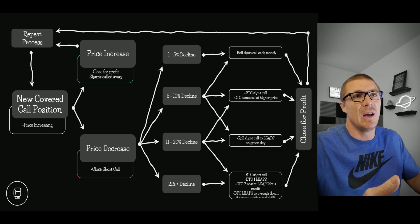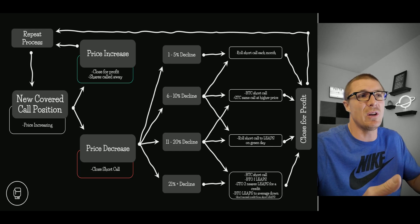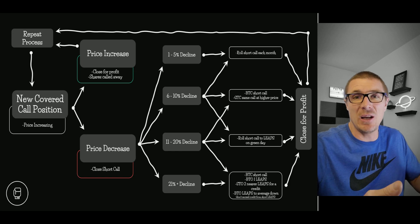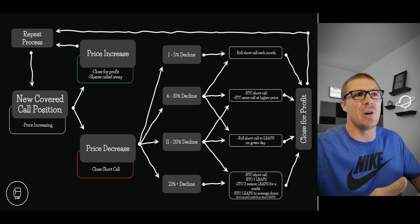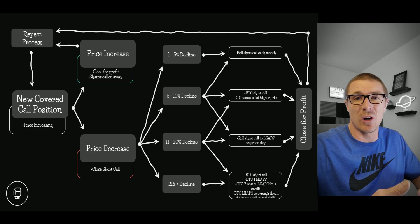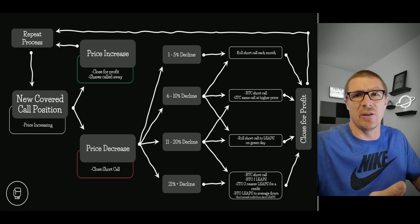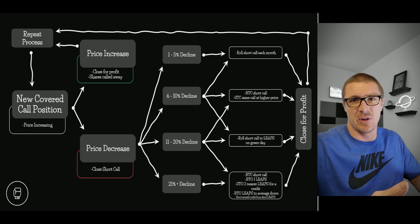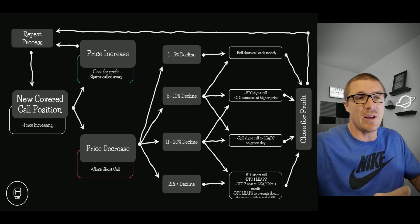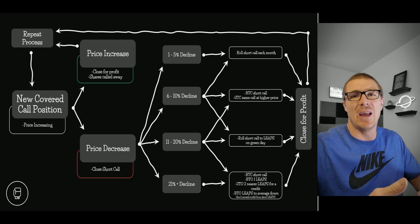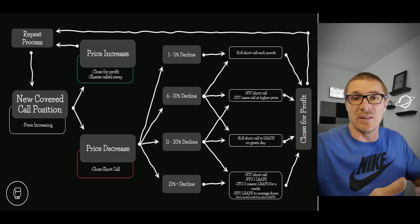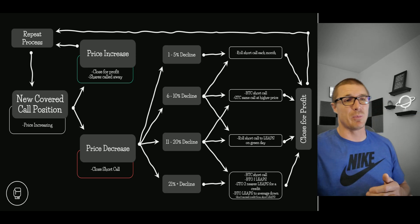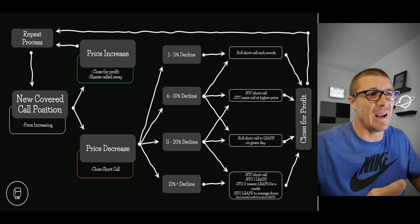If it's a six to ten percent decline, you can see I've got three arrows coming off that one — that means you could really do any of those three things. What I would prefer to do is just buy to close the short call. If you get a ten percent decline on Coke and it trades down by five dollars in a week or two, that short call should be worth the majority of the premium you sold it for. One option I like: buy back that call and then sell that exact same strike at the same month for a higher price, place it as a good-till-cancel order, and you might be able to take in a little extra premium.